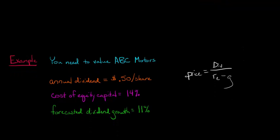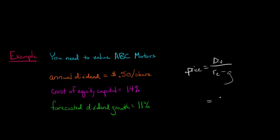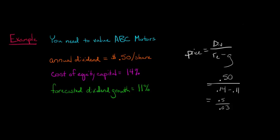Now I'm just going to plug in the numbers. So we're going to have that's equal to $0.50 over our cost of equity capital, which is 14%, so that's 0.14 minus 0.11, that 11% of our forecasted growth. So now we've got 0.5 over 0.03, which is going to give us a share price of $16.67. This is going to be our share price for ABC Motors based on the dividend discount model.